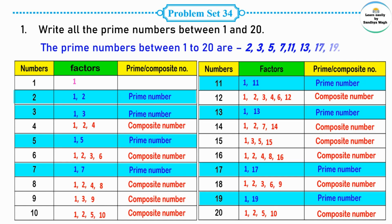The prime numbers between 1 and 20 are: 2, 3, 5, 7, 11, 13, 17, and 19.